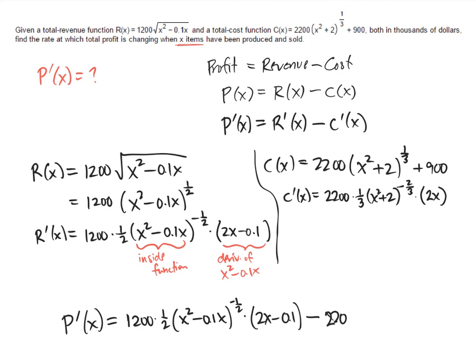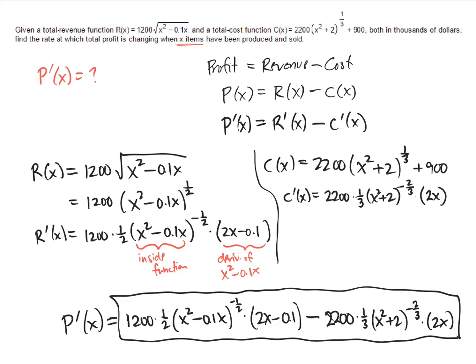2200 times 1/3, x squared plus 2 to the negative 2/3 times 2x. That is my answer.